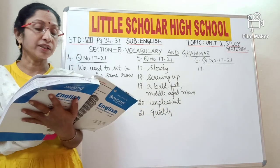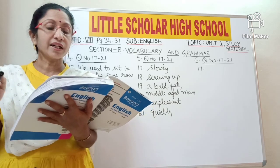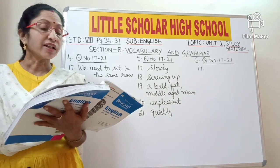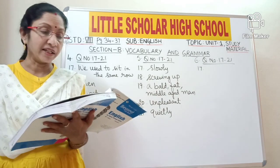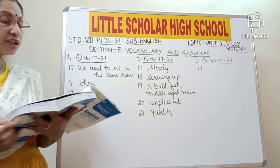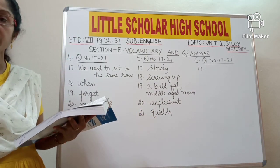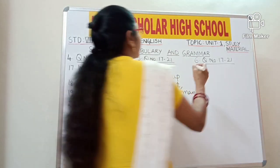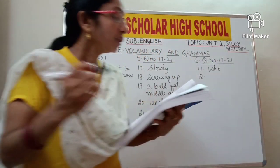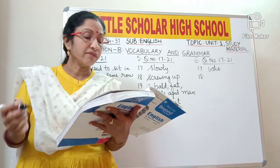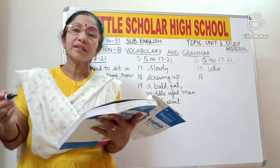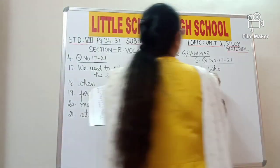Question number 17: replace the WH word with the correct one. 'What did Gopi marry?' — we are talking about a person whom Gopi married. So 'who did Gopi marry?' The WH word 'what' will be replaced with 'who'. Question number 18: the word 'suddenly' is underlined. Write the opposite of 'suddenly', which is 'gradually'. Opposite of 'suddenly' is 'gradually'.